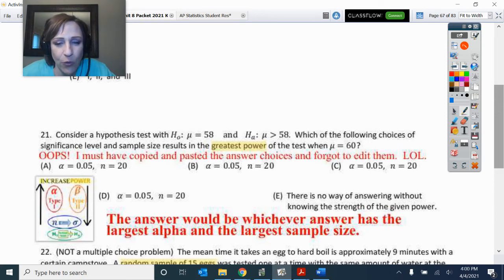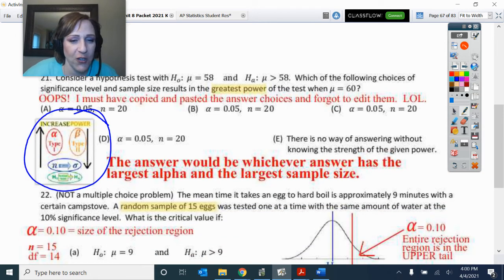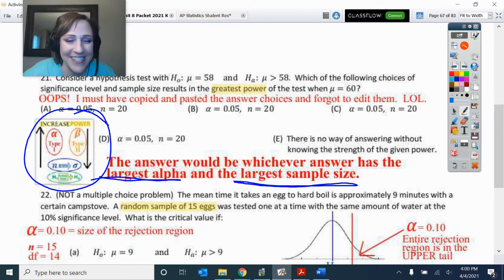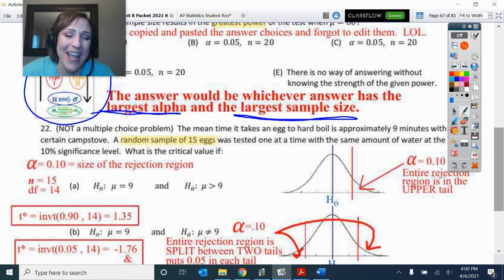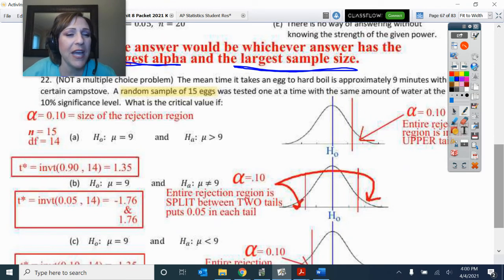And which one would result in the greatest power? So what I'm thinking of is my little picture here that shows the items that need the greatest power. So what I would have been looking for is whichever answer choice included the answer, whichever had the largest alpha and the largest sample size. That's what I would have been looking for. And HA being far enough, farthest away that if that was an option, I would have done that too. But my bad. I think I did not finish that problem.